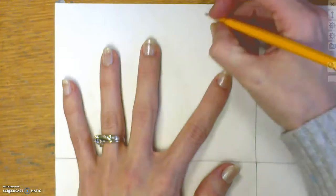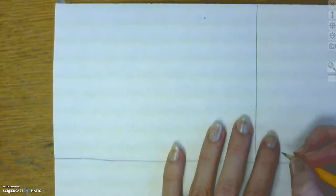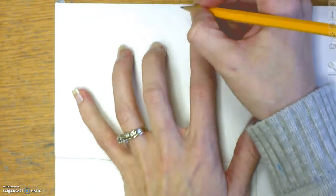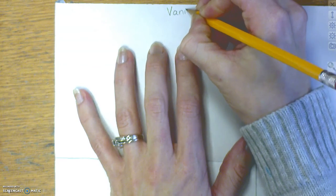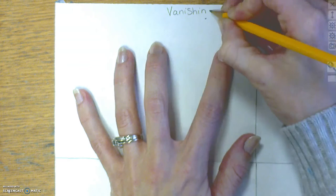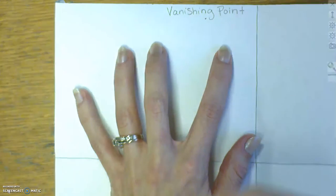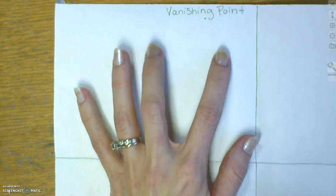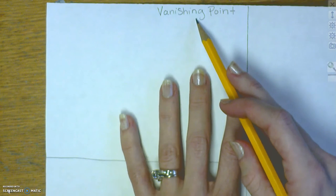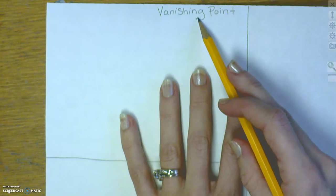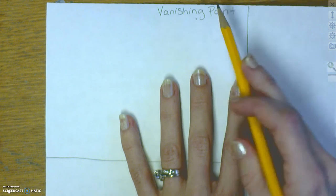The first thing I'm going to do is draw a little point in the upper right-hand corner. Make sure it's in the upper right-hand corner, and you're going to label it 'vanishing point.' This is the only time we're going to label our vanishing point, and we have to have a vanishing point every single time we're drawing in one-point perspective. We're only drawing in one point, which means we have one vanishing point.